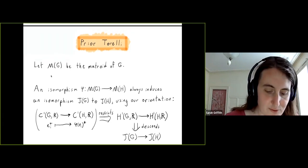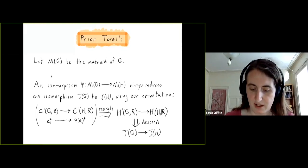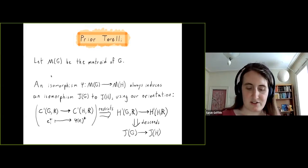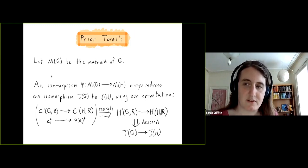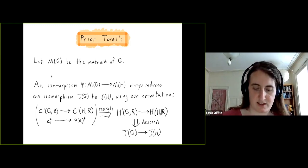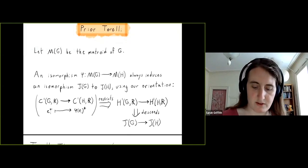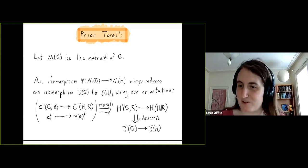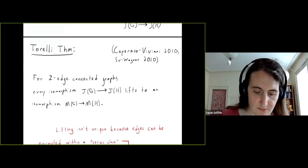Those with particular inclinations may be thinking this describes a functor. You actually need more data than described to turn this into a functor, and that turns out to be a significant part of the proof of the extension I worked with. But morally, you should think of this as something very close to a functor from matroids of graphs to Jacobians.